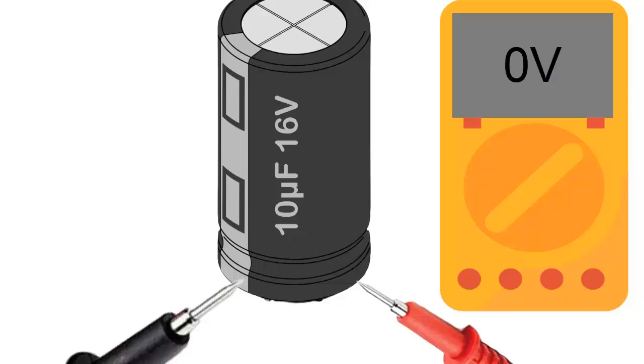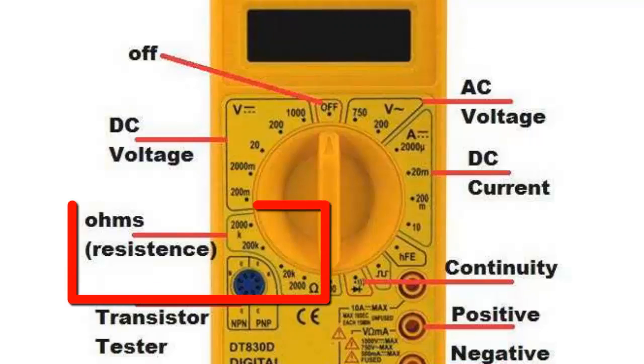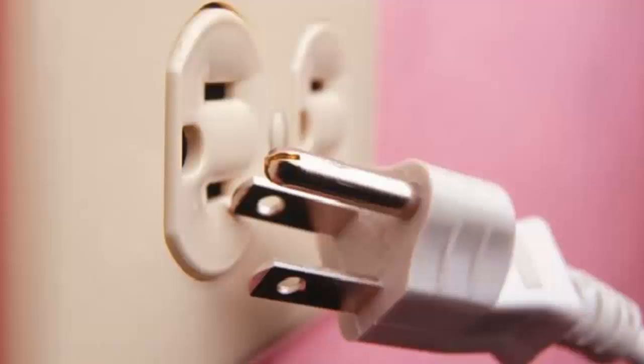Now proceed to measure the capacitor with a multimeter by following these steps. Set the multimeter to resistance mode. With the electronic board unpowered, measure the resistance between the capacitor terminals.